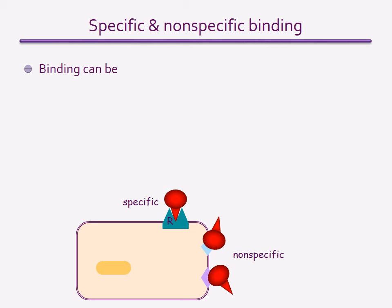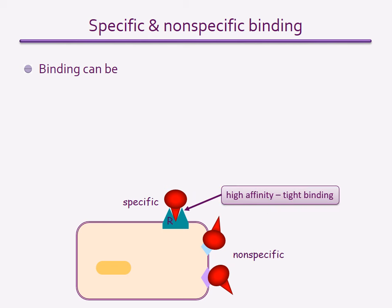Before explaining how the data from a radio ligand binding assay is analysed, we need to consider an important factor that can affect the measurements. By definition, ligands bind to receptors with high affinity and therefore show specificity for the receptor. This type of binding shows saturation — in other words, there is a limited number of receptor sites, so if you keep increasing the concentration of the ligand, eventually all of the sites become bound or saturated.